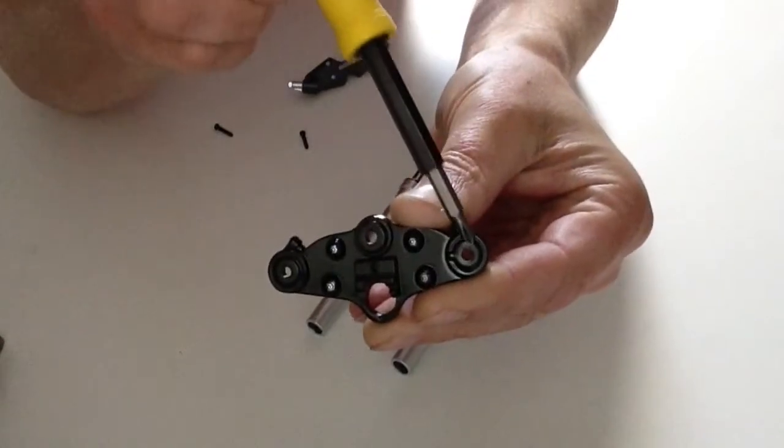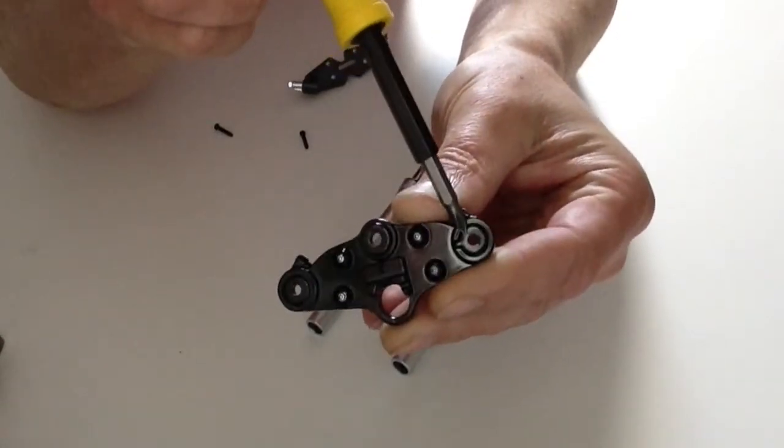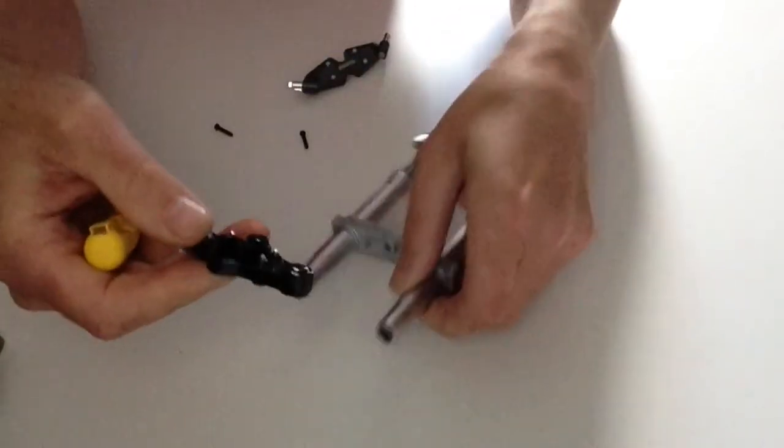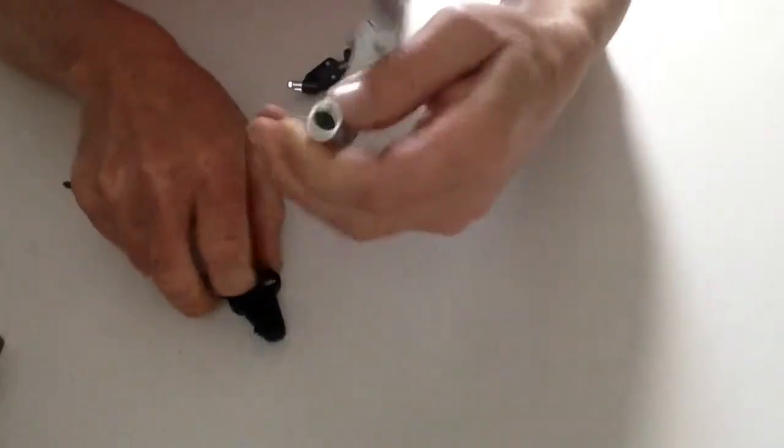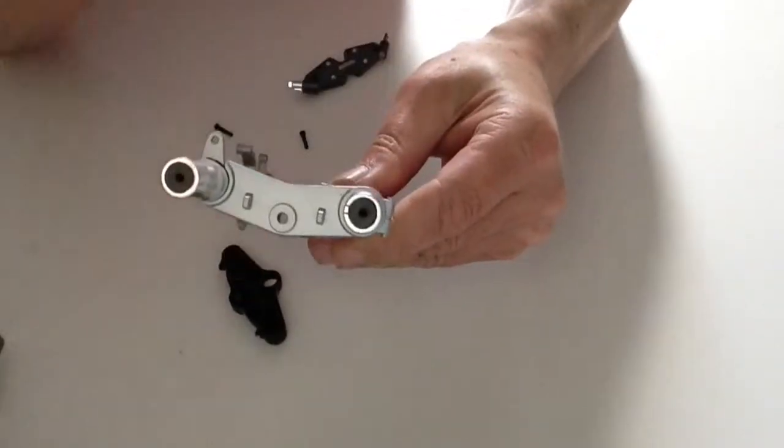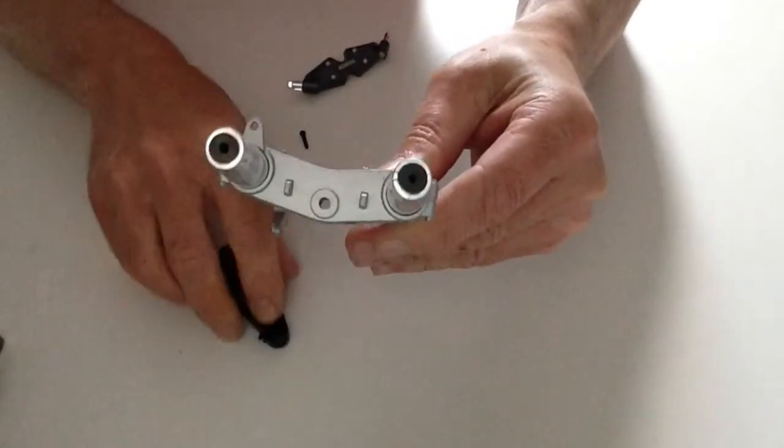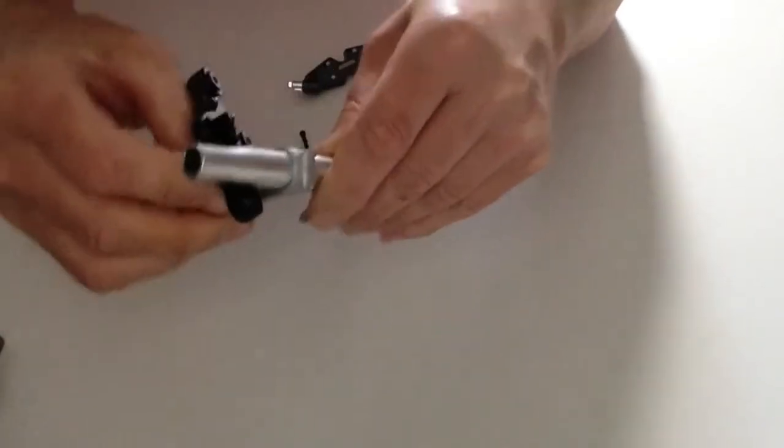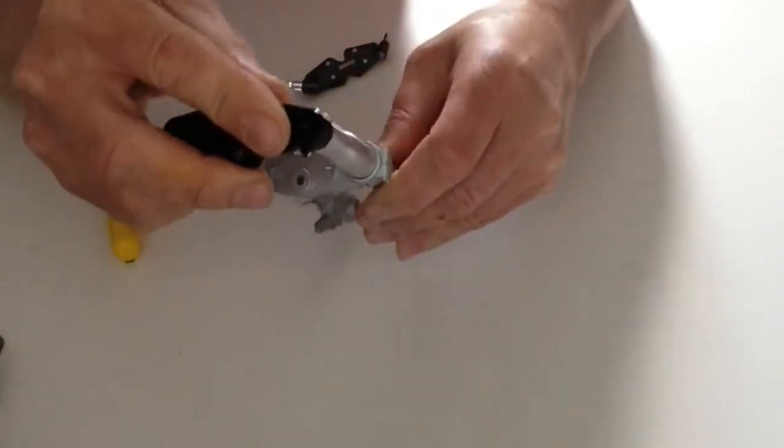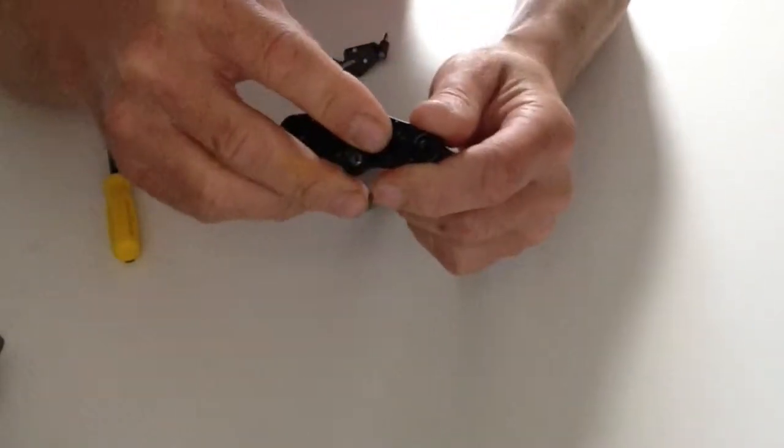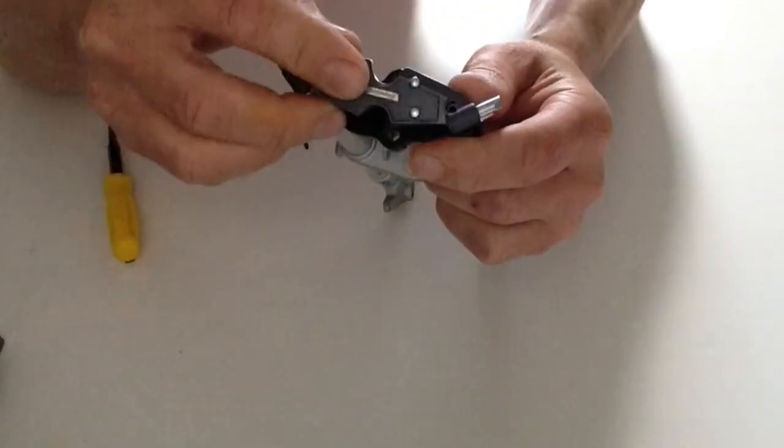has got a tiny little notch. Line that up with the notch that you see here on top of the forks like so, and then get your handlebar ready.